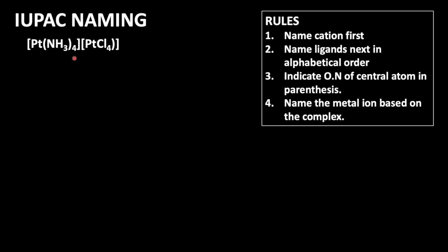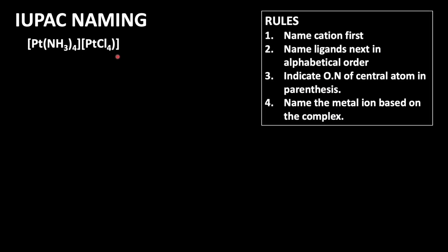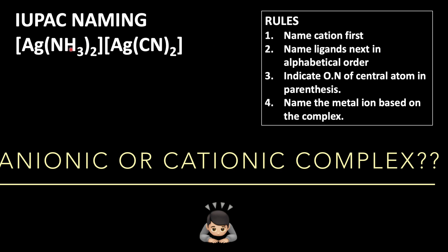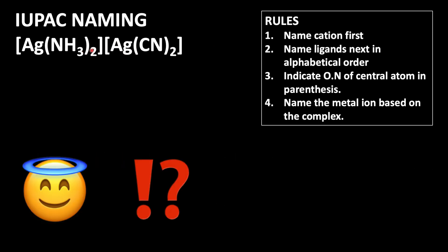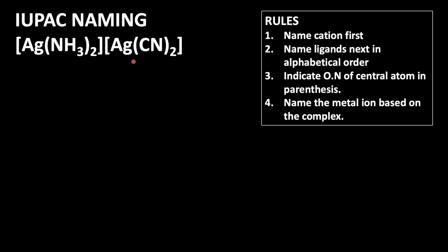Now let's see our compound [Ag(NH3)2][Ag(CN)2]. Here we do not have a simple cation. It is present as both a cationic complex and anionic complex. But which one is cationic and which one is anionic? It is difficult to find out, right?